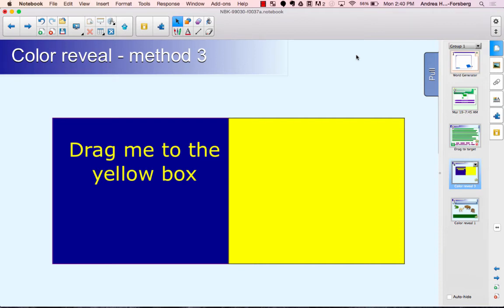An easy way to make lessons interactive is by revealing answers on the SmartBoard. One way to do this is by using the idea of color reveal. In this case they're using two different colored boxes. Most likely one box would have the question and the other box would have the answer.